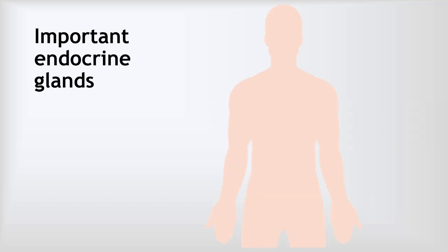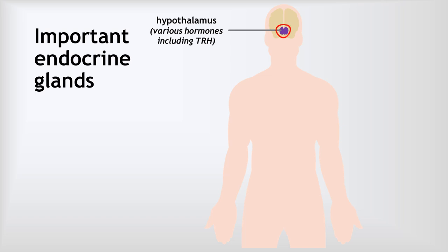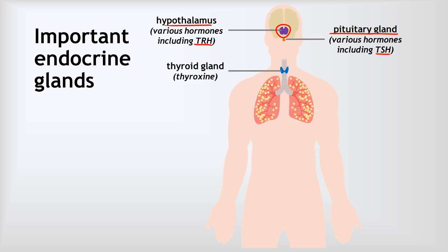Starting at the top of the body, the first endocrine gland we'll meet is an organ in the brain called the hypothalamus. The hypothalamus produces quite a wide range of different hormones, including one called TRH that we'll look at towards the end of the video. Moving down slightly, just beneath the brain, is a gland called the pituitary gland. The pituitary gland is often known as the master gland because it produces so many different hormones. One relevant to us later in the video is a hormone called TSH. Moving a little bit further down, around the throat, we've got the thyroid gland, which produces a hormone called thyroxin that we will also be looking at later.